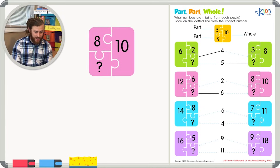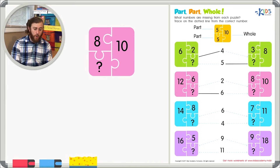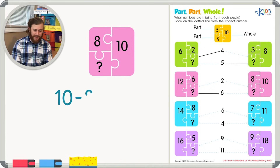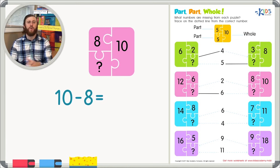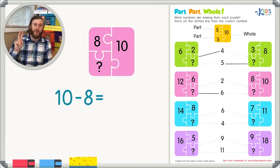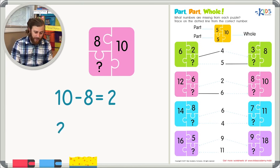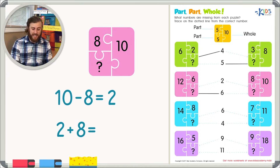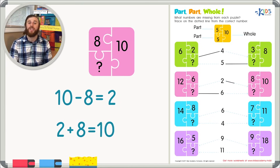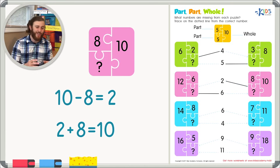We have 10 as our whole number and eight as one of the parts. We will use subtraction to figure out the missing part: 10 minus eight, and when you take away eight from 10, you're left with two. We'll check our work by adding two plus eight, and of course that gives us 10. So we can trace on the dotted line from 10 to two.